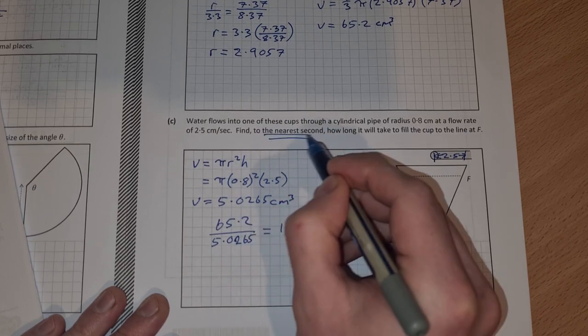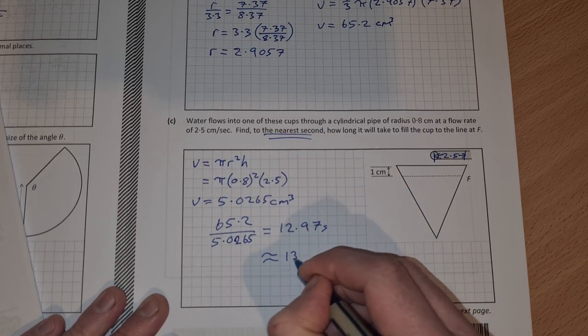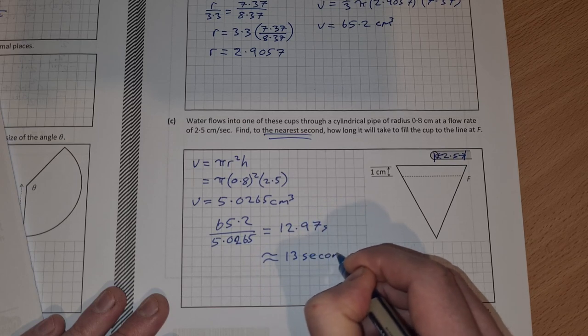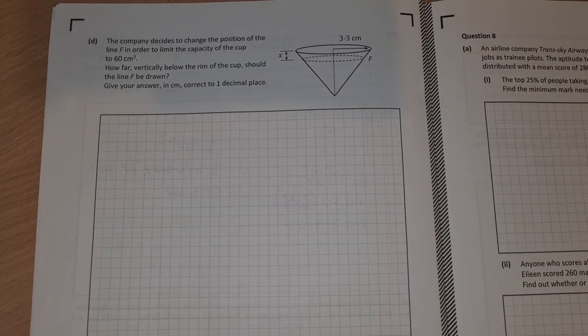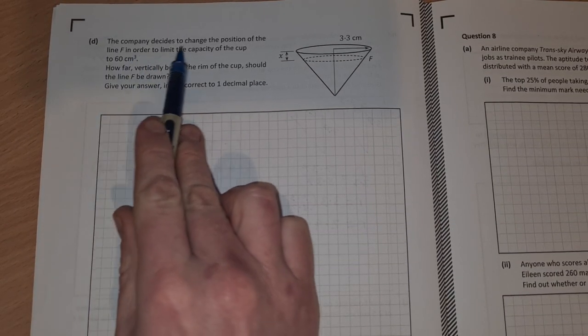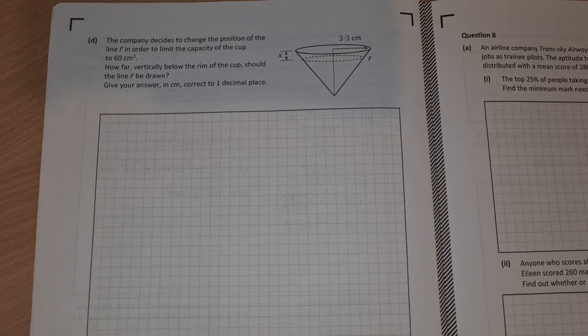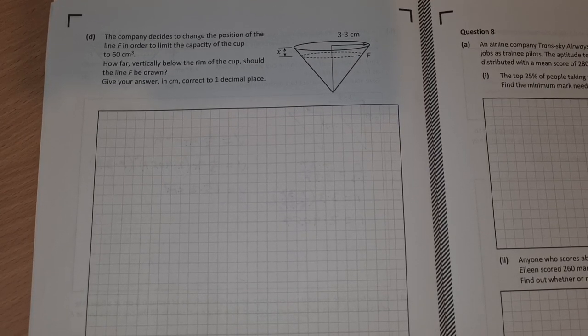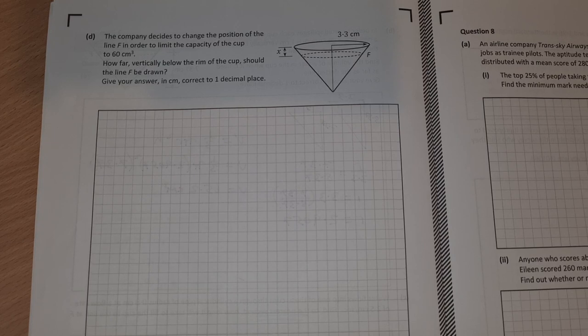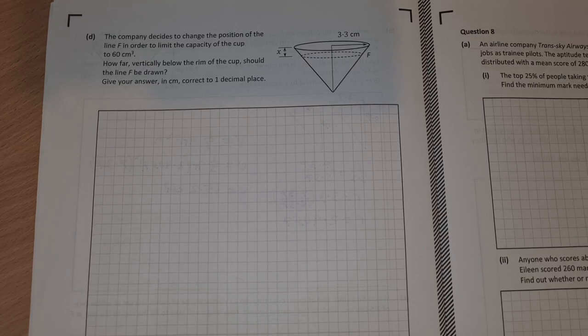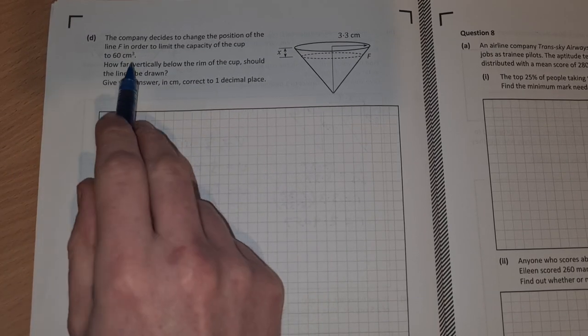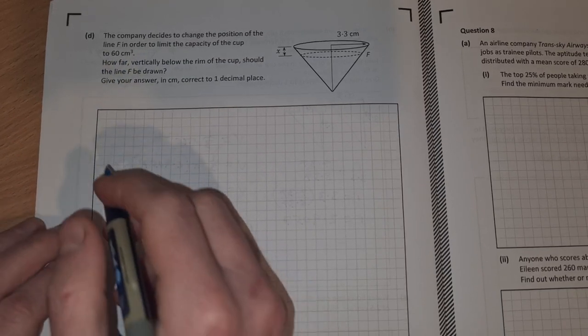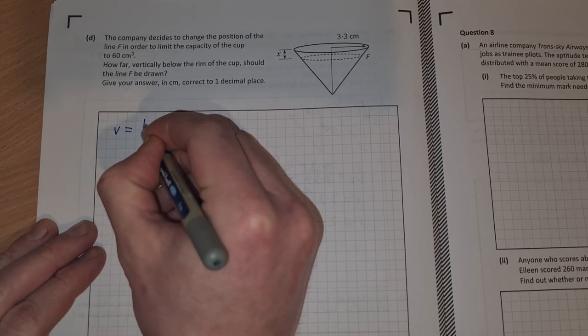Part D, the final part. The company decides to change the position of the line f in order to limit the capacity of the cup to 60 cubic centimeters. How far vertically below the rim of the cup should the line f be drawn? Give your answer in centimeters correct to one decimal place. We want the volume to be 60 centimeters. We know the volume formula again is ⅓πr²h.